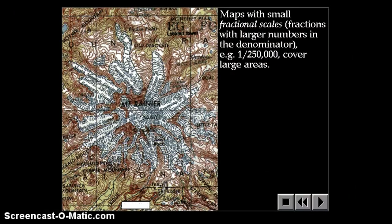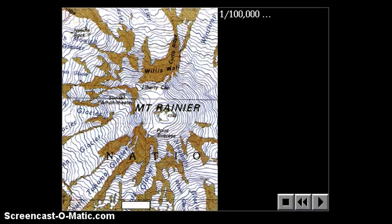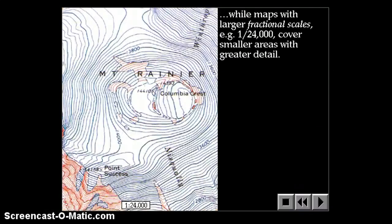Maps with small fractional scales, fractions with larger numbers in the denominator, for example 1 to 250,000, cover very large areas. Maps that are 1 to 100,000 are a little bit more zoomed in. Maps that cover 1 to 24,000 are covering a smaller area, but with much more detail.